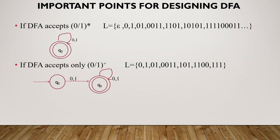DFA accepts (0 or 1) star — that means 0 and 1 and any combination, including epsilon. So any combination of 0 and 1 is possible. If we take epsilon, we ask for the starting state — it is also the final state. We ask for the arrow mark. Then we will ask for the combinations of 0 and 1. Then we ask for the loop — loop on both 0 and 1. Any combination of 0 and 1 is accepted.